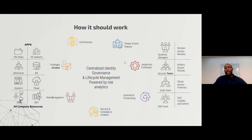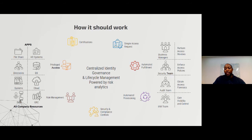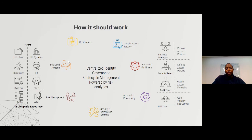From there you can start bringing in automated fulfillment. When a new user joins the company, we know there are certain applications that everyone uses — for example, the timesheet system. You can bring in automated provisioning where users can request access, and instead of it going to the service desk it goes directly to line managers for approval. You can also start bringing in security and compliance controls, and once that is done, bring in role management.